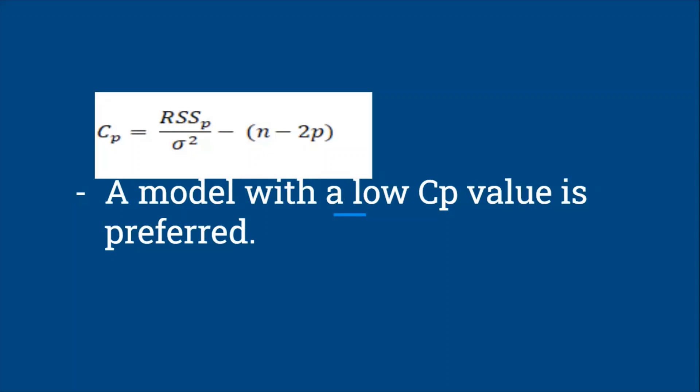The last or least followed criteria is the forecast chi-square criteria. The forecast chi-square test has weak statistical power. This means that the probability that the test will correctly reject a false null hypothesis is low, and because of this reason, the test is used as a signal rather than a definitive test.